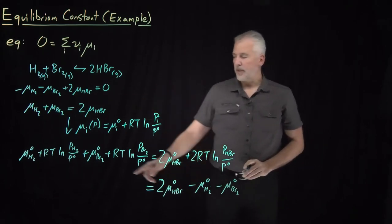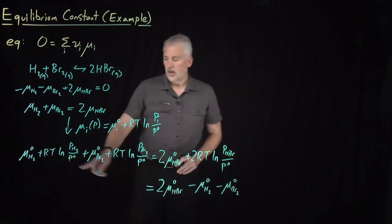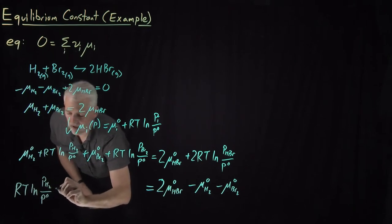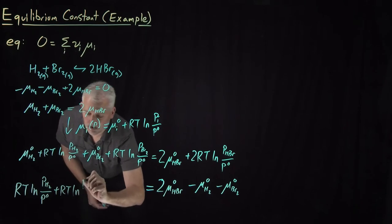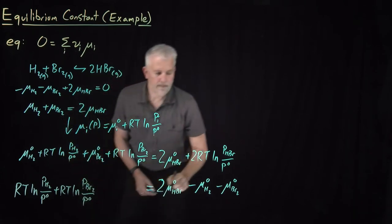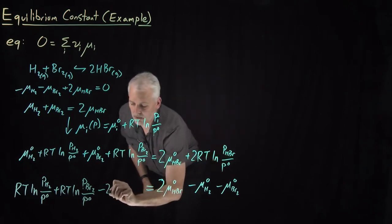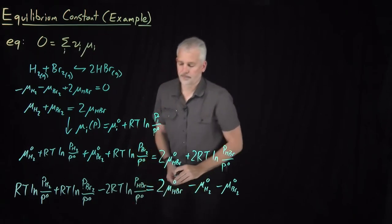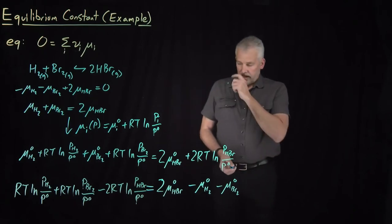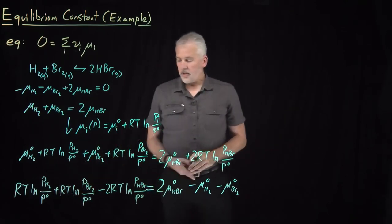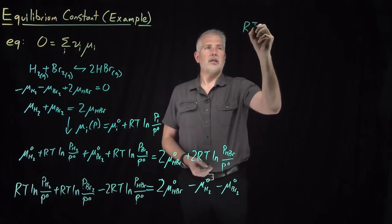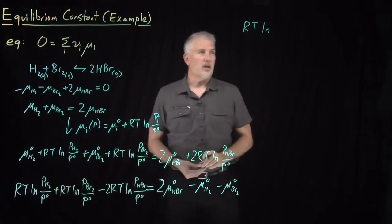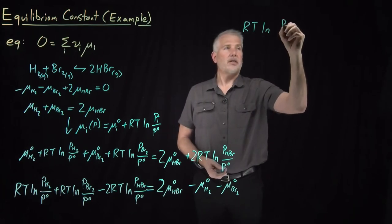On the left side of the equation I keep all the RT·ln pressure terms: RT·ln(P_H₂/P°) plus RT·ln(P_Br₂/P°), and with a negative sign I bring over minus 2·RT·ln(P_HBr/P°). Now that I've got all these RT·ln terms together, I can collect them into one: it's a natural log of a product, since ln plus ln minus ln combines into a single logarithm.